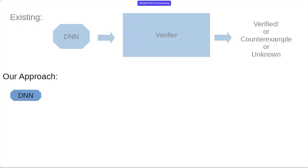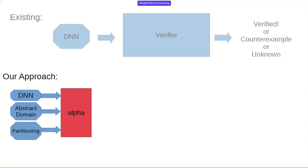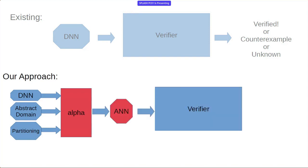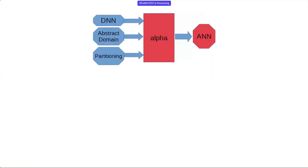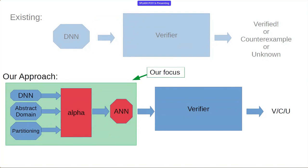The approach in this paper: you take a neural network, you take an abstract domain — think octagons, think intervals — and then you take a partitioning of those nodes. You plug all that into an abstraction function alpha, and out of that you get an abstracted neural network, which you can plug into a verifier. The key is that the abstracted neural network has much fewer nodes, but it's still sound — whatever result you get is going to be believable.